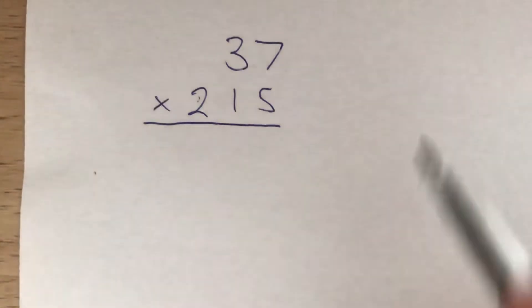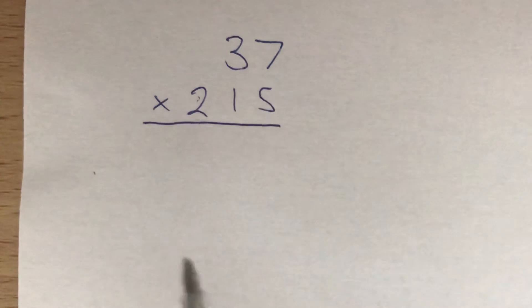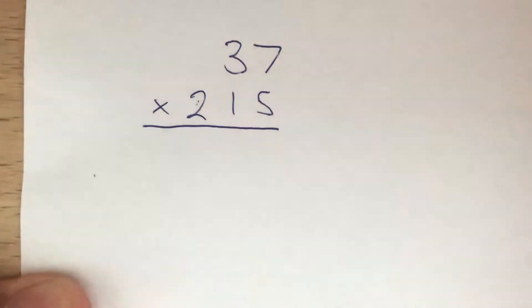Now let's look at 37 times 215. This time we've got a number in the hundreds on the bottom, which only changes what we do slightly.